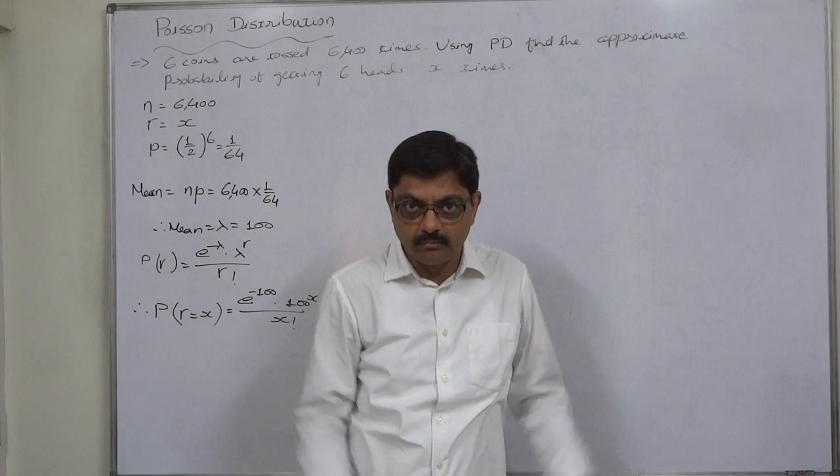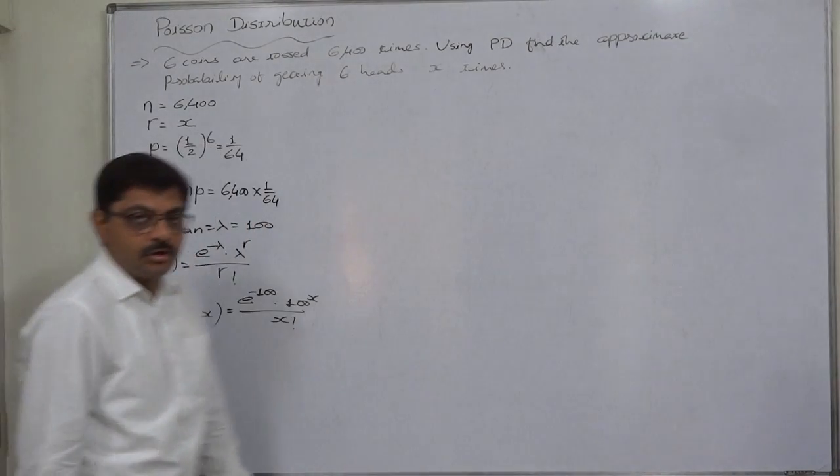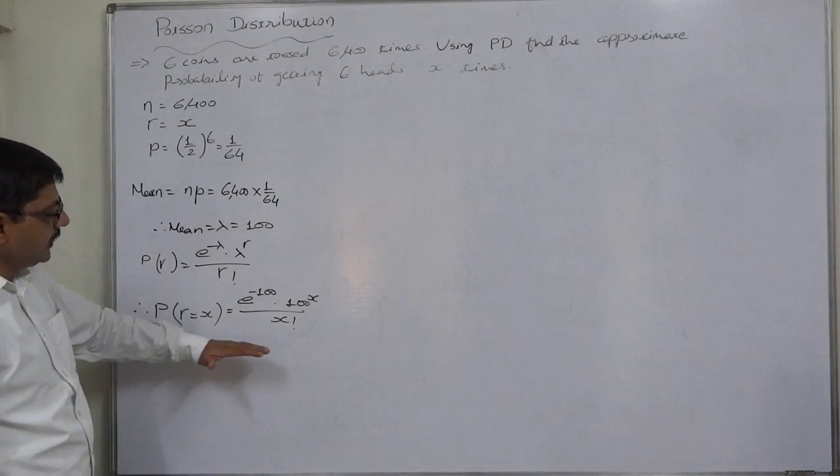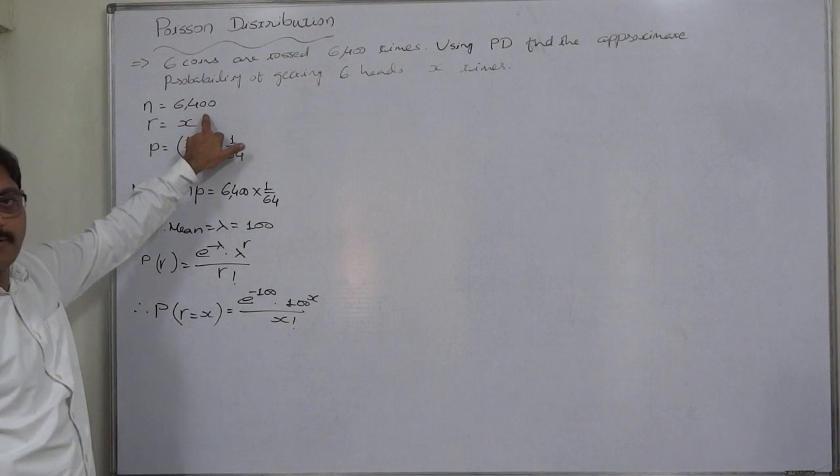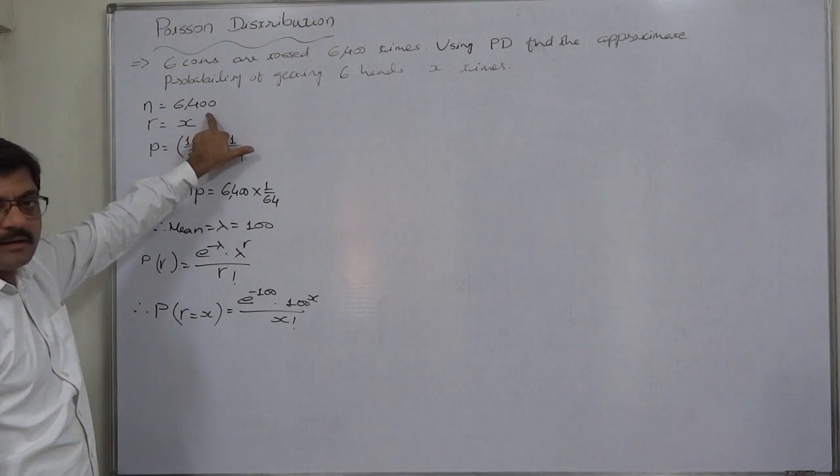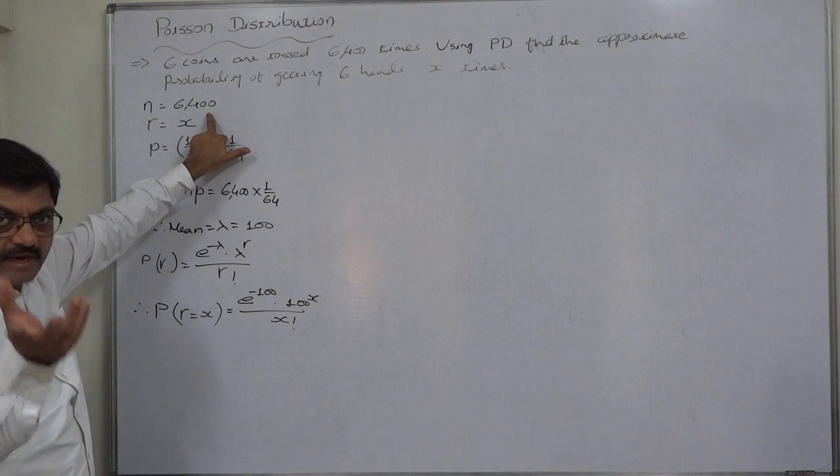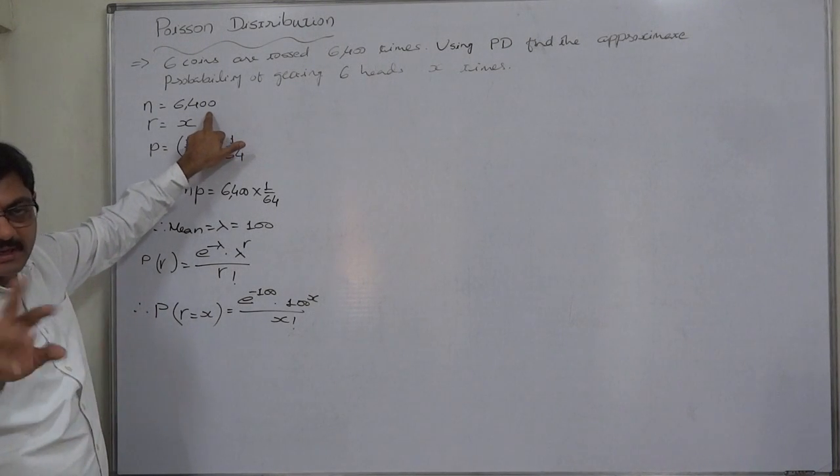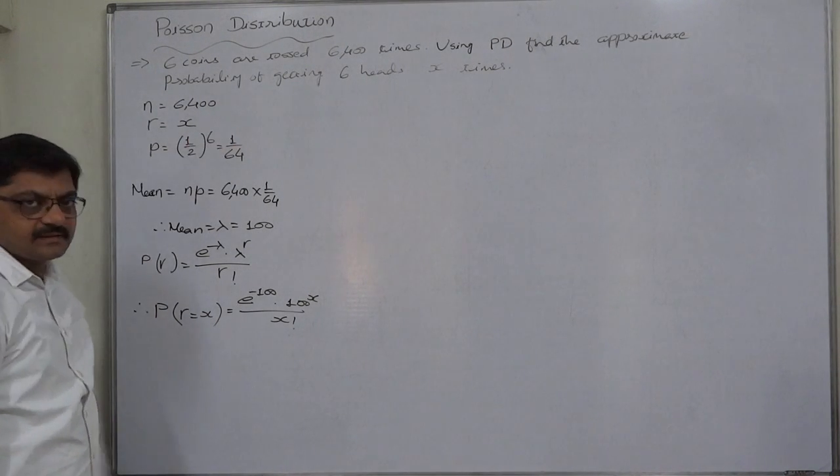How many times? x number of times. So that's it. But the important thing is 6400 is to be taken as n, small n rather. Binomial reference is there. Not capital N. Yes. Thank you.